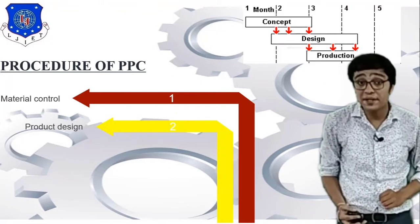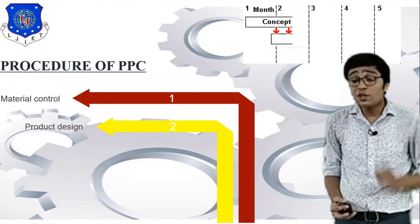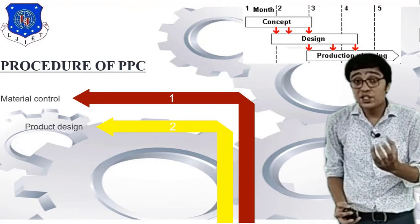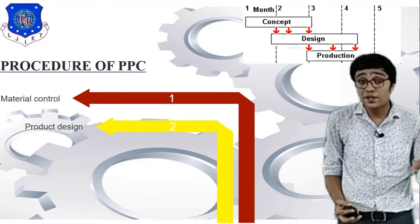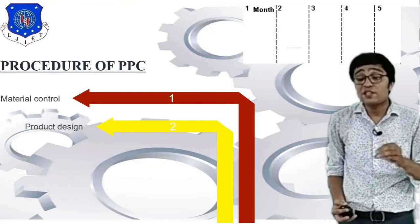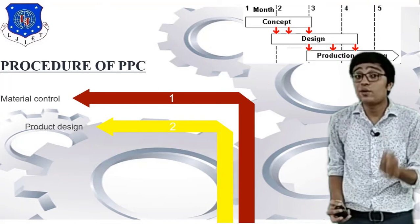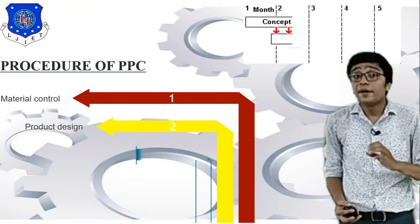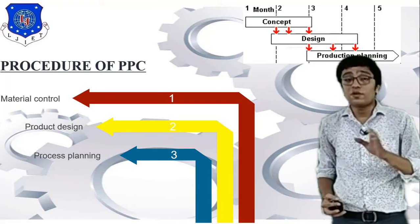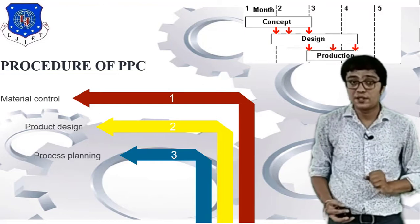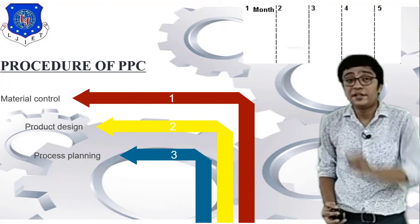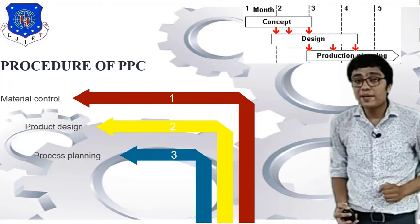The second step is product design — a combination of the words product and design. Before starting your operation, you must finalize the product design. The third step is process planning, which also depends on operation sequences, and based on those sequences your plant layout is developed. Process planning is also very important.